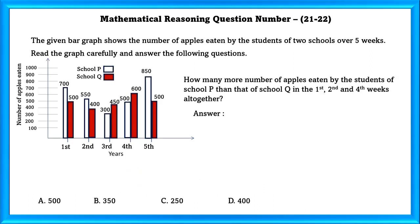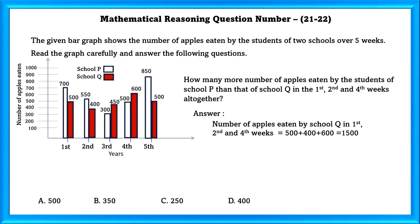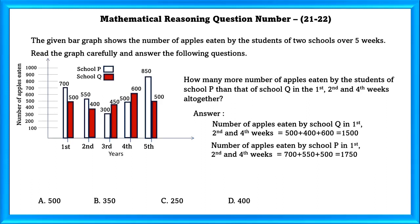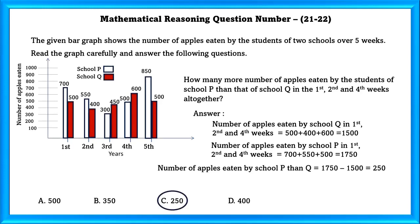How many more apples were eaten by students of school P than school Q in the 1st, 2nd, and 4th weeks altogether? Number of apples eaten by school Q in those weeks is 500 + 400 + 600 = 1500. Number of apples eaten by school P is 700 + 550 + 500 = 1750. So school P ate 1750 − 1500 = 250 more apples.